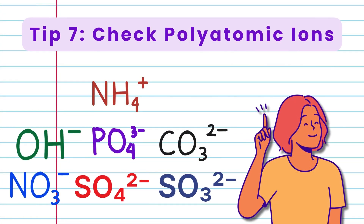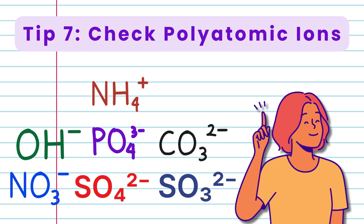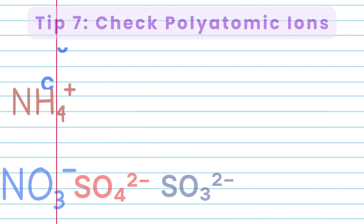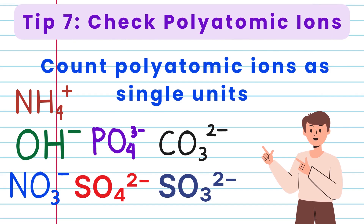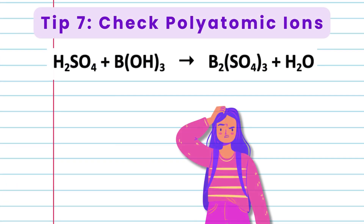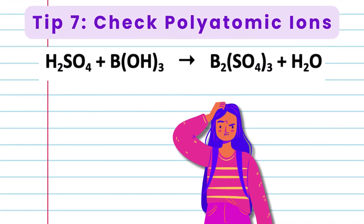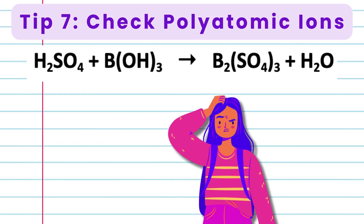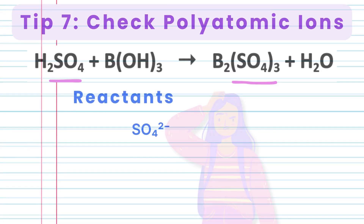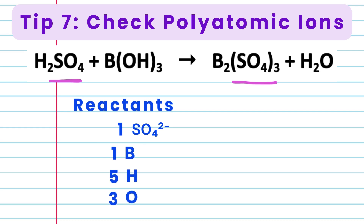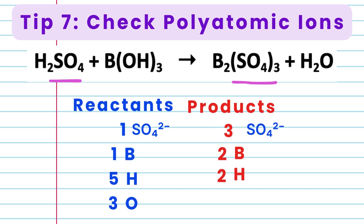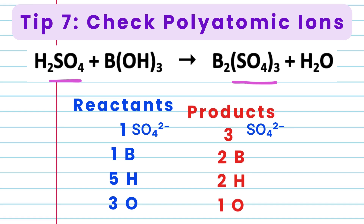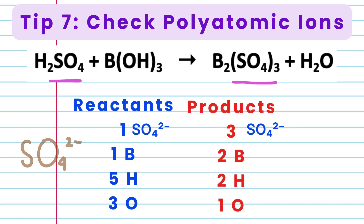Tip 7: Check polyatomic ions. If polyatomic ions are present in the equation, count them as single units. Consider: H2SO4 plus B(OH)3 gives B2(SO4)3 plus H2O. On the reactant side we have 1 SO4, 1 boron, 5 hydrogen, and 3 oxygen. On the product side: 3 SO4, 2 boron, 2 hydrogen, and 1 oxygen. Since the polyatomic ion SO4 is intact, we count it as a unit.